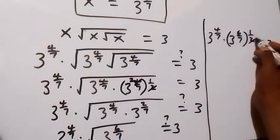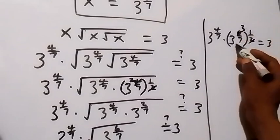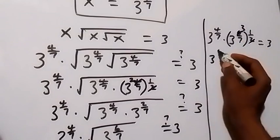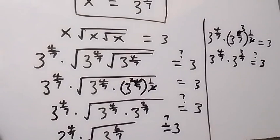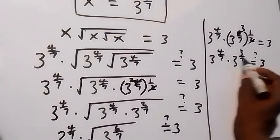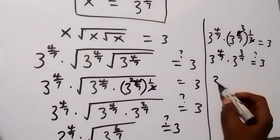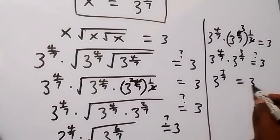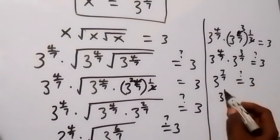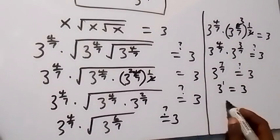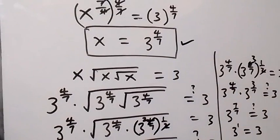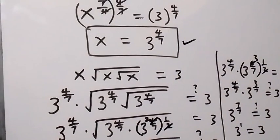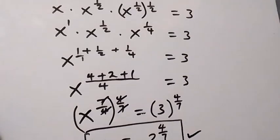From here, 6 over 7 times one half gives 3 over 7. So we have 3 raised to power 4 over 7 times 3 raised to power 3 over 7, equals 3. Adding the powers: 4 over 7 plus 3 over 7 gives 7 over 7, which equals 1. So 3 raised to power 1 equals 3, and left hand side equals right hand side. The value x equals 3 raised to power 4 over 7 satisfies the given problem. Thank you for watching, don't forget to subscribe for more exciting videos, bye for now.